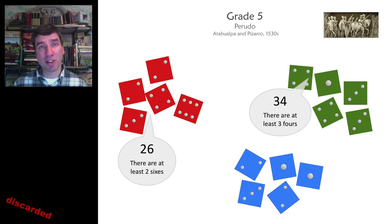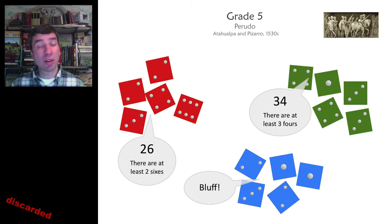Blue doesn't have any fours. So blue thinks, ah, bluff. So let's see if blue is correct. No, it was not a bluff. There are three fours on the table. So blue loses a dice.